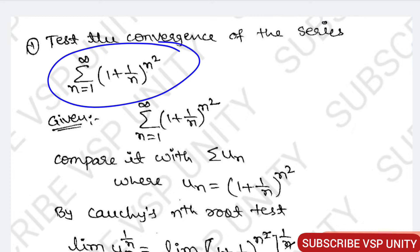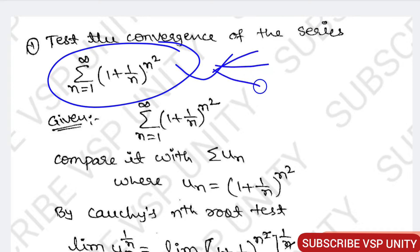If you are given any series like this in the examination, we have to find whether the given series is convergent or divergent, or test fails. Which test we are using — that is most important.